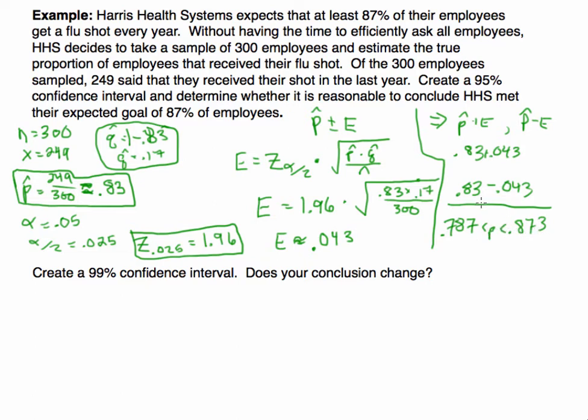What can we conclude? Well, if we look at the proportion they were hoping for, it was 0.87. 0.87 is contained in this interval. So we could say there is evidence to support this claim or their expectation that the population proportion is actually 0.87. And that's the percentage of employees that got a flu shot. It didn't necessarily look like it based on our sample, but it's still possible.